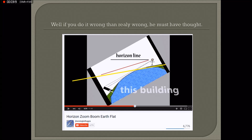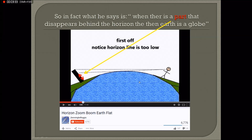If he had been a bit more clever, he should have taken the straight line under his feet and said 'if you look in that direction, the horizontal line should be here.' Now, using his own picture: according to him, on a flat earth it would be impossible for part of a building to disappear behind that line. So we can safely say that when we see a building where a part goes behind the horizon, you must be on the globe. On a flat earth you would always be able to see the bottom.